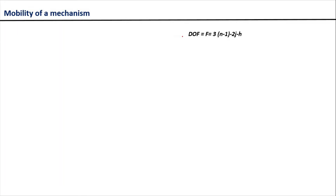If you remember in the previous session we provided the Kutzbach criteria to calculate the degree of freedom of a mechanism, which is given by F equals 3(N minus 1) minus 2J minus H. In certain cases the Kutzbach criteria does not hold true and produces erroneous results, so in this session we will be talking about those special cases where the Kutzbach criteria is not going to produce accurate degree of freedom.